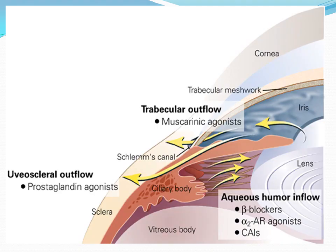In summary, this figure shows the sites of action of anti-glaucoma drugs alongside the aqueous humor formation and drainage pathways. Drugs that decrease aqueous humor inflow include beta blockers, alpha-2 agonists, and carbonic anhydrase inhibitors. To increase drainage, muscarinic agonists increase trabecular outflow, while prostaglandin analogues increase uveoscleral outflow.